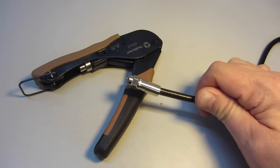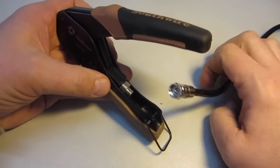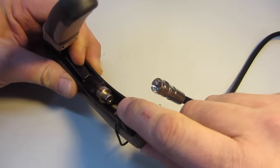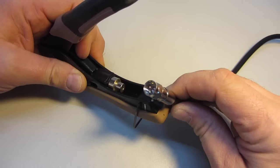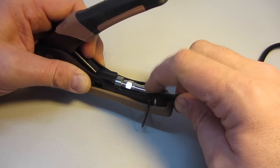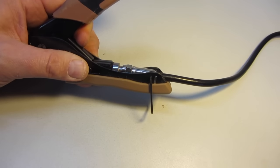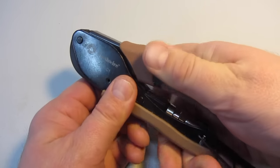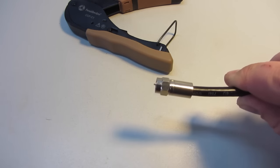I can now secure my F connector to the coax cable using my compression tool. As you can see, there is a hole on this piece here. That receives the wire on the end of the connector. I simply put it in and drop the back end of the connector down into the catch. Just like that. Now you simply squeeze the handles together and that crimps the F connector to the coax cable.